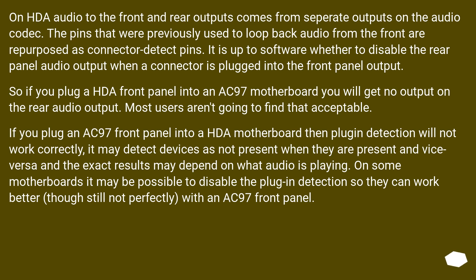With HD audio, uncut audio to the front and rear outputs comes from separate outputs on the audio codec. The pins previously used to loop back audio from the front are repurposed as connector detect pins. It is up to software whether to disable the rear panel audio output when a connector is plugged into the front panel output. If you plug an HD audio front panel into an AC97 motherboard, you will get no output on the rear audio output — most users won't find that acceptable. If you plug an AC97 front panel into an HD audio motherboard, plugin detection will not work correctly. On some motherboards it may be possible to disable the plugin detection to work better, though still not perfectly, with an AC97 front panel.